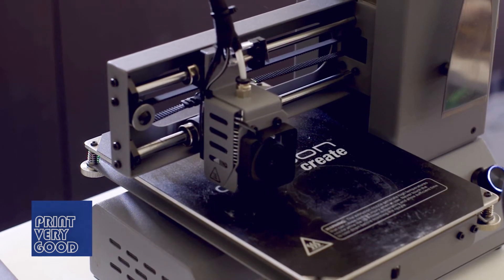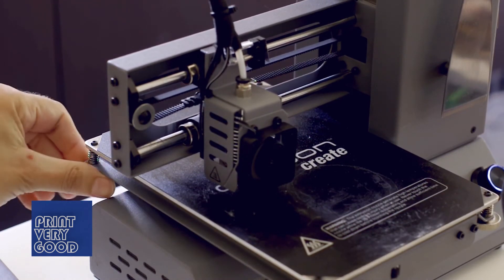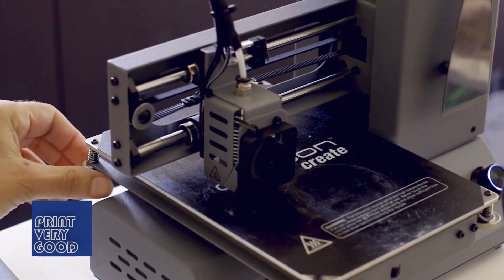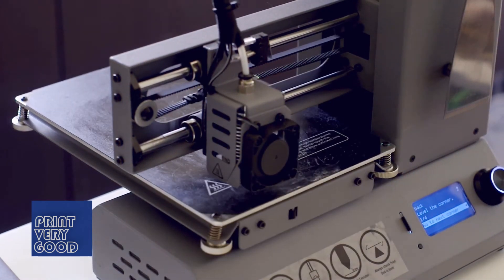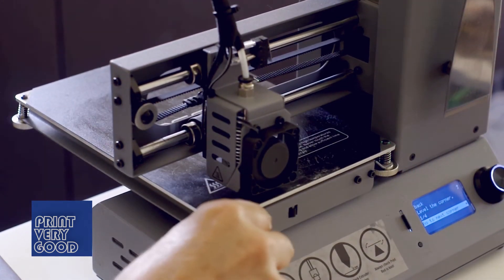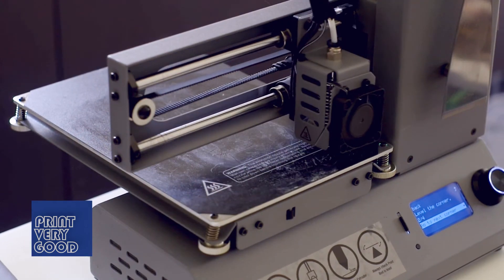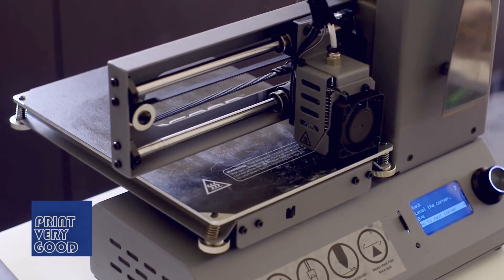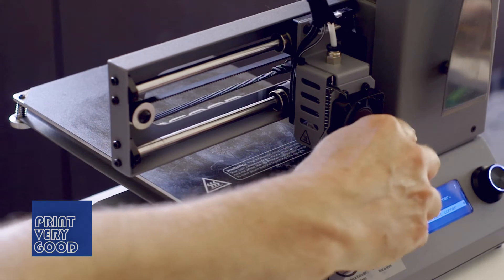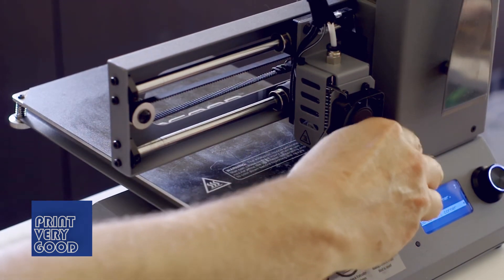It's either a power brownout—that's where the electricity just drops down a little bit from 240 volts—or there's a fault in the unit somewhere which is causing it to randomly reset itself. I won't know until I've done a few more prints and see if the problem reoccurs.